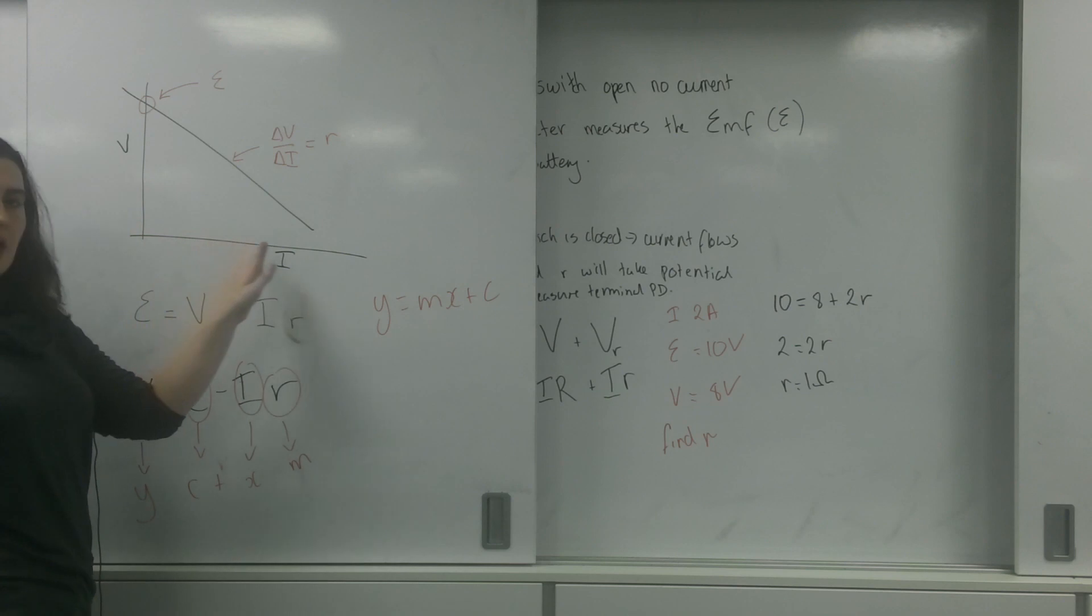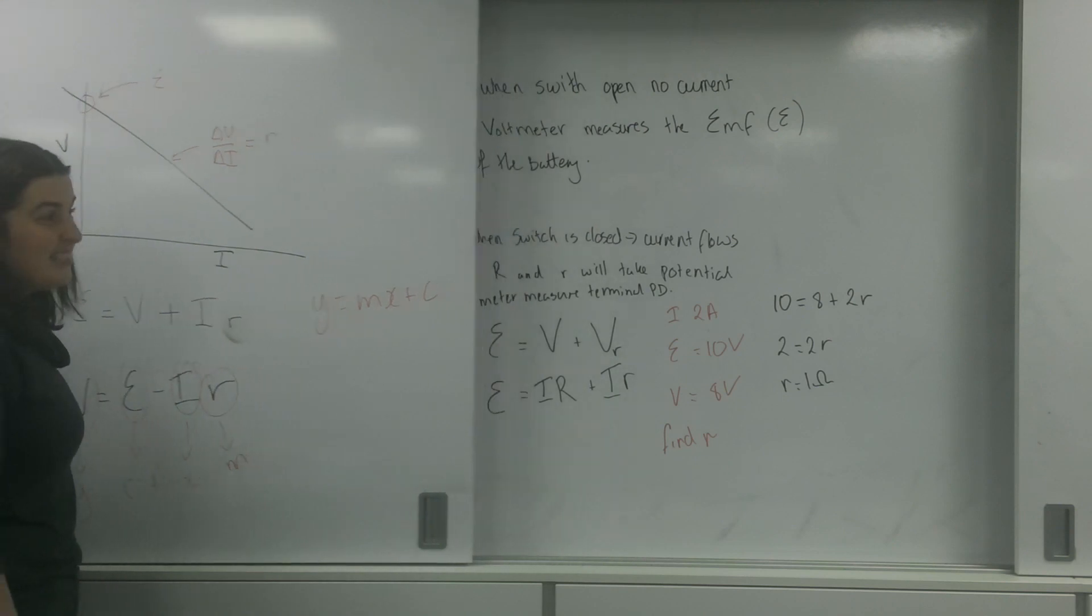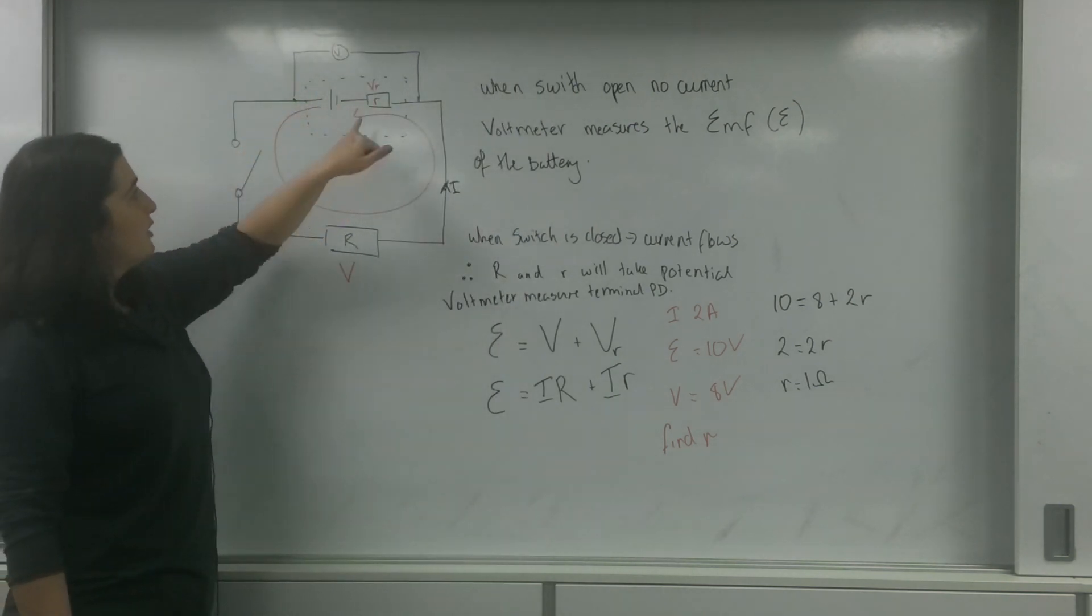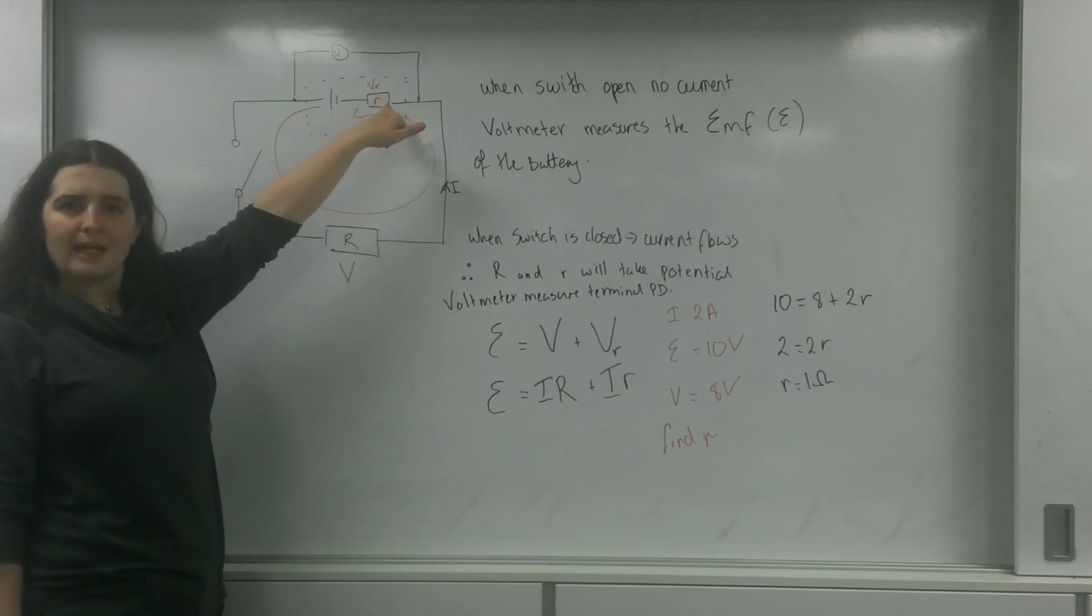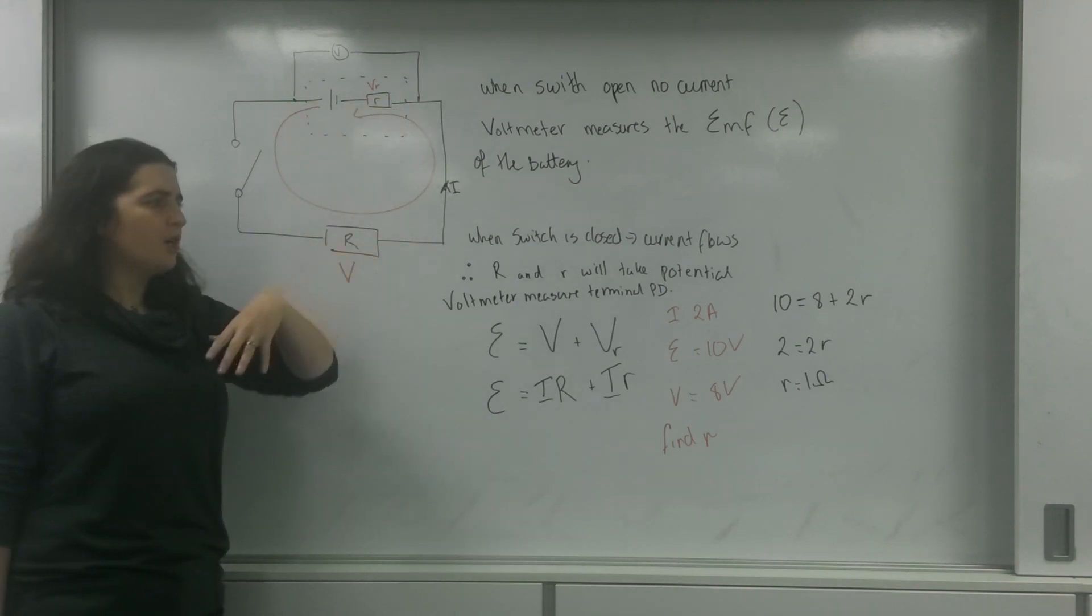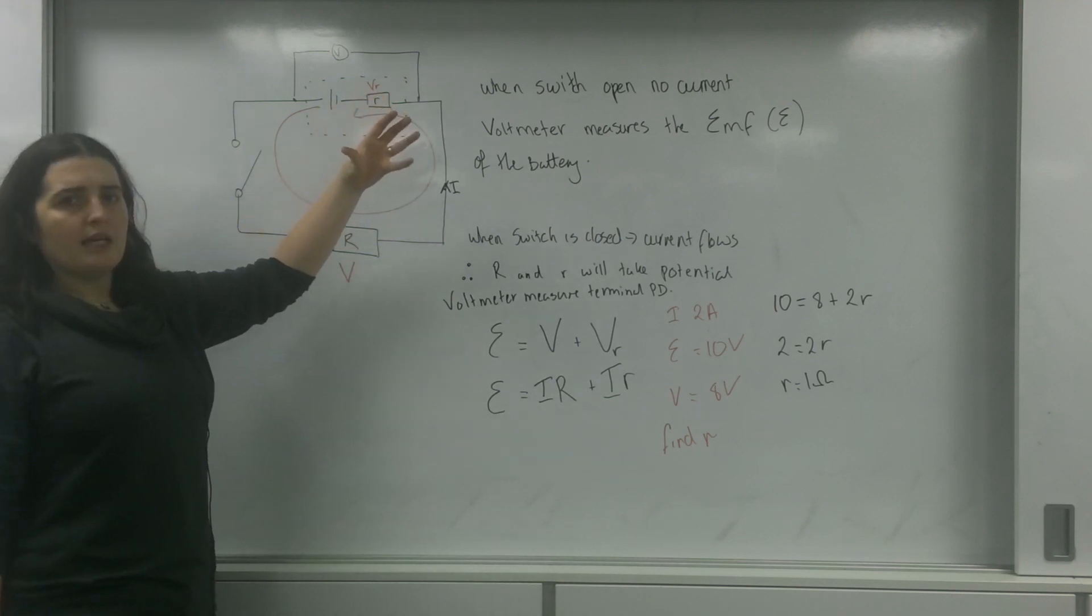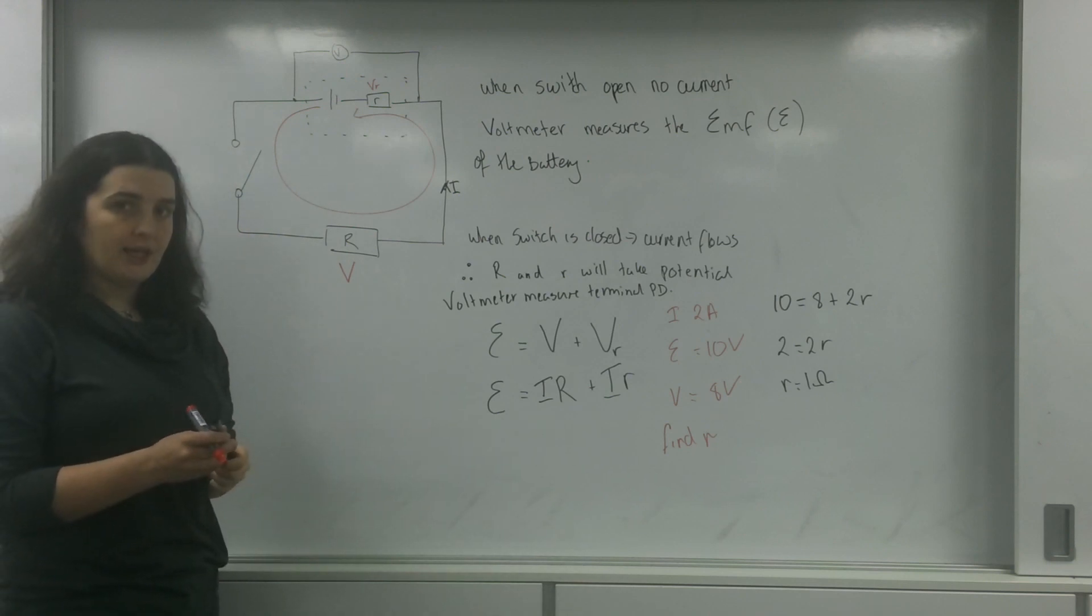And what this graph is showing you is the more current, the less voltage that goes to the circuit. And that does make sense. The more current there is, the more this little resistor is going to take away because of V equals IR, Ohm's law. So the more current there is, the less voltage will be going to the rest of the circuit. And that is internal resistance.